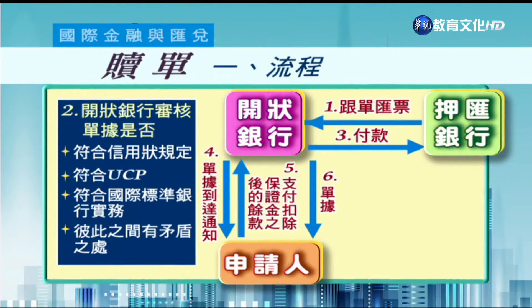都沒有問題之後，開狀銀行就會付款給提示人，然後通知申請人：單據已經到了，你可以來贖單了。這個時候申請人要支付扣除保證金之後的餘款，然後領取單據。對申請人來說，領取單據當然最重要的就是要憑單據去提貨。